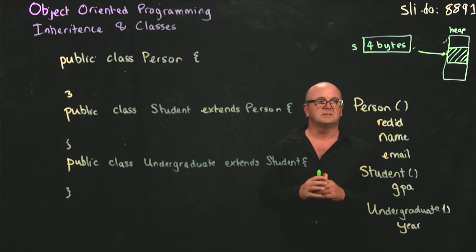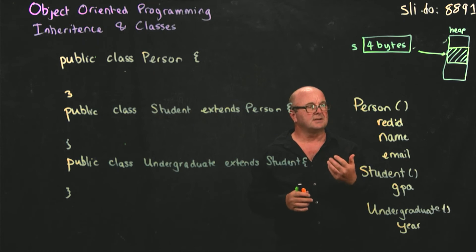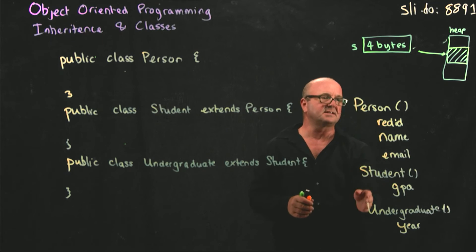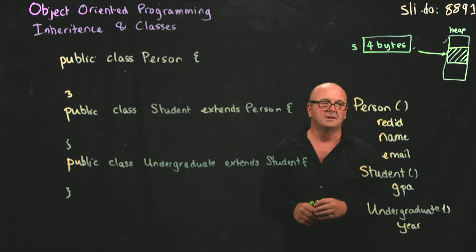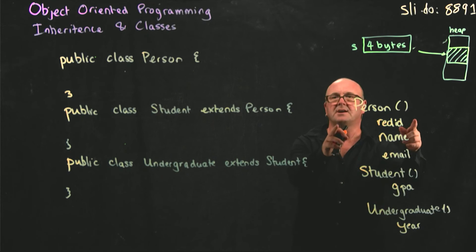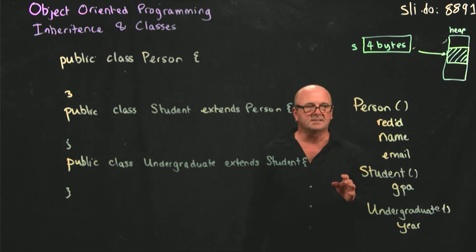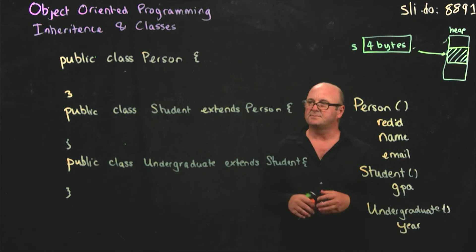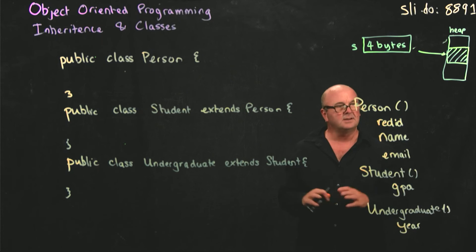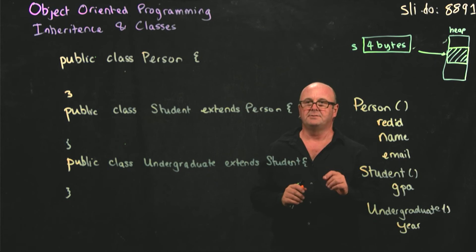In some languages, you can extend multiple classes. It's called multiple inheritance. But it becomes complicated. Because if I had another class that I extended from that also had, for example, a red ID variable, and I extended from two different classes, how would I know which one I was calling? There are ways of dealing with that. But the way that Java deals with it, and many languages deal with it, is by saying we're not going to allow multiple inheritance, we'll only allow you to inherit from a single class.